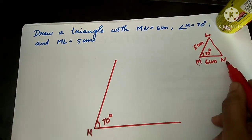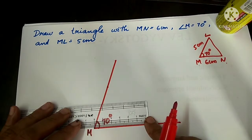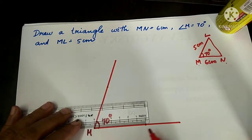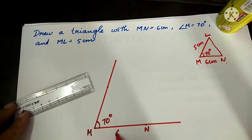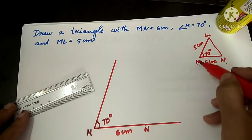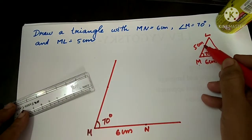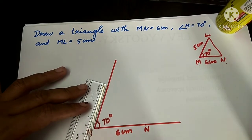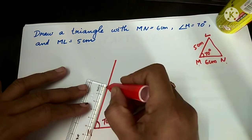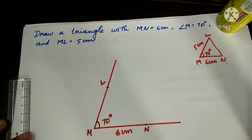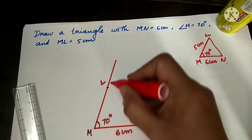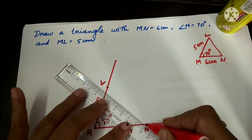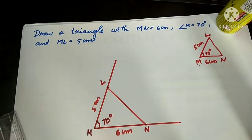From M to N it is 6 cm. Using a scale, I mark a point 6 cm away from M and mark it as N. From M to L it is 5 cm. Again, by using the scale, I mark a point 5 cm away from M and mark it as L. This side is 5 cm. By joining the points N and L, we get the required triangle.